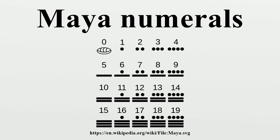Numbers after 19 were written vertically in powers of 20. For example, 33 would be written as one dot above three dots, which are in turn atop two lines. The first dot represents 1 times 20, which is added to three dots and two bars, or 13. Therefore, 20 plus 13 equals 33.